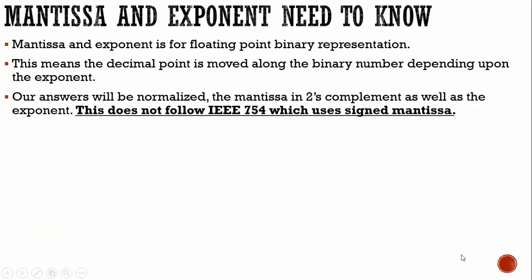What do you need to know? Mantissa and exponent is for floating point binary representation. This means the decimal point is moved along the binary number depending upon the exponent. Our answers that we're going to be doing today will be normalized. The mantissa is going to be in two's complement as well as the exponent. If you're not in a Cambridge class, you need to find out if your class is following the IEEE 754 which uses sign mantissa. In our video, we are not using sign mantissa. We are using two's complement.